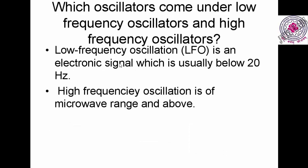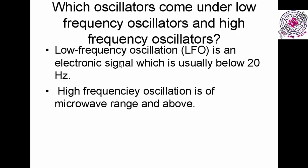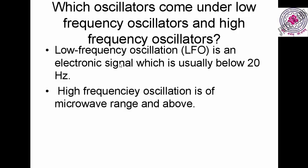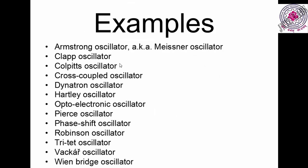Next, why do oscillations occur at low frequencies versus high frequencies? Low frequency oscillations are those below 20 Hz, and they are known as low frequency oscillations. Oscillations in the microwave range and above are known as high frequency oscillations. These are the two differences.